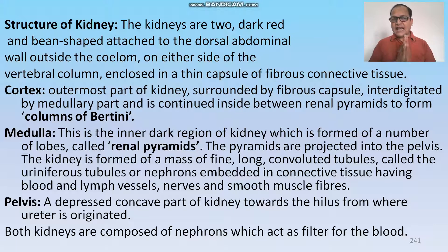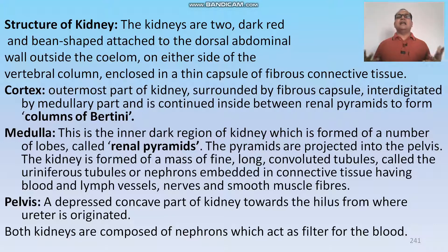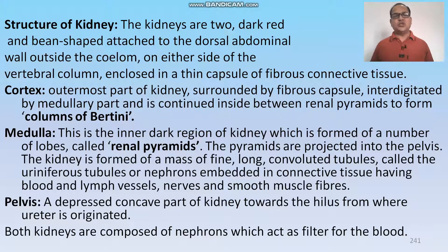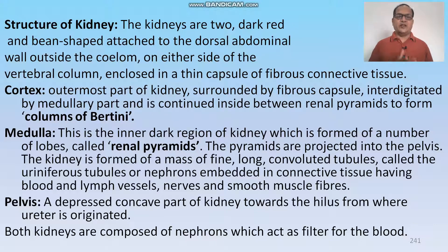The medulla is the inner dark region of the kidney, which is in the form of a number of lobes called renal pyramids. Renal pyramids are the outpushings of the medulla into the cortical region, and the pyramids project into the pelvis. The kidney is formed of a mass of fine long convoluted tubules called uriniferous tubules or nephrons, embedded in connective tissue having blood vessels, lymph vessels, nerves and smooth muscles. The pelvis is the concave part of the kidney towards the hilum, from where the ureter originates.